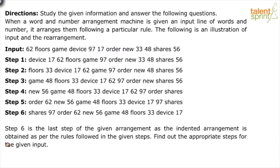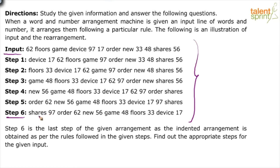First and foremost, we need to understand what is happening in this step-by-step process. The first strategy is to look at the last step — never try to look at step one, step two, step three directly. Just observe the input and go directly to the last step, because that is where you understand the logic. Look at step six: it has a proper sequence where words and numbers are in alternate positions, starting with a word.